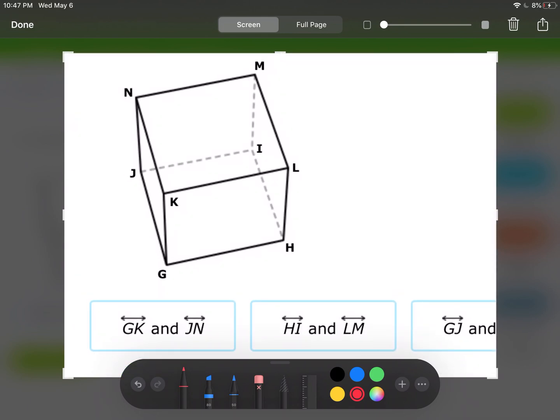Alright, GK and JN. I'm gonna highlight those. GK is here and JN is here. Notice that both of those lines are on the same face of the cube. Since they're on the same face, they're on the same plane, and that means these definitely can't be skew lines. Second of all, I actually know these lines are parallel. They're in the same plane and they're never going to touch, so they're parallel.